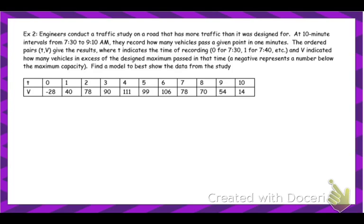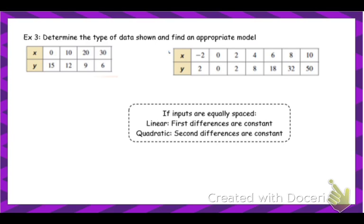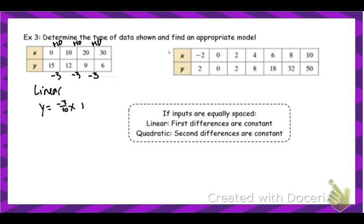We can also determine what kind of data we have just from a table. To check for a linear model, we look at how x and y are changing. If x's change by a constant amount and y's also change by a constant amount, it's linear — because that gives us a consistent slope. In this case the slope would be negative 3 over 10, and the y-intercept would be 15.